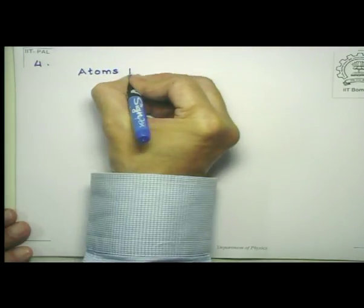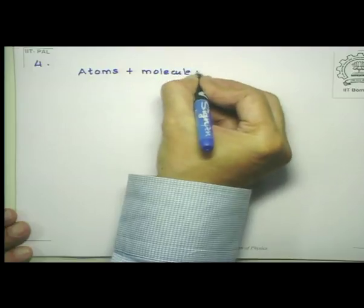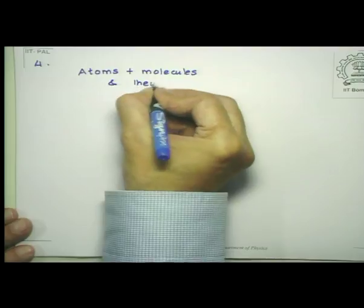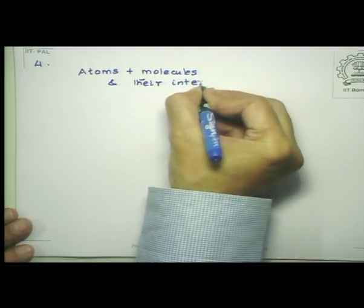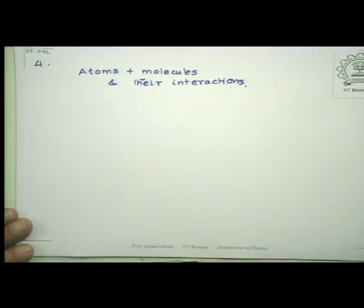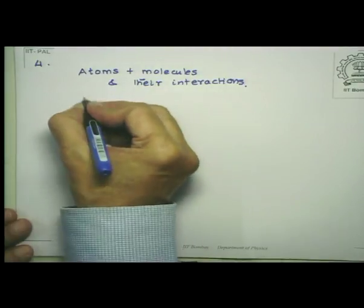All materials consist of atoms and molecules, and the electrical property of a material depends upon the atoms and molecules which constitute it and their interactions. The ability to conduct also depends upon the physical condition of the material — for example, pressure, temperature, etc. For the purpose of electric current, the class of materials we are interested in are known as conductors.